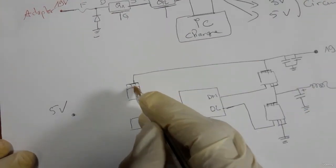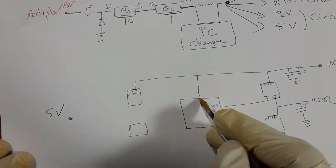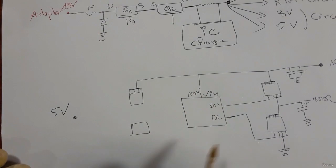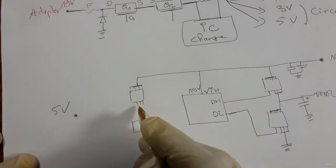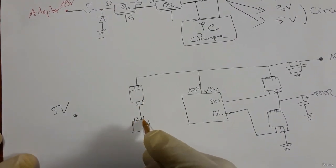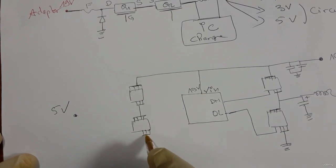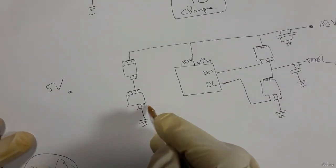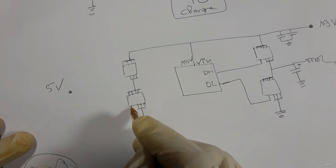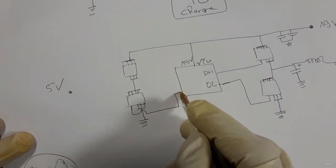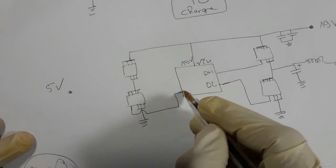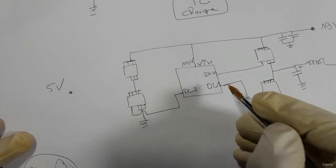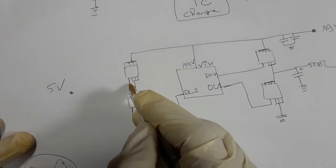For the 5V circuit, the 19V also powers the IC as V-in. The source of the high-side MOSFET connects to the drain of the low-side MOSFET, and the source of the low-side MOSFET connects to ground. The gate is connected to the IC — this is drive-low-2 and drive-low-1.